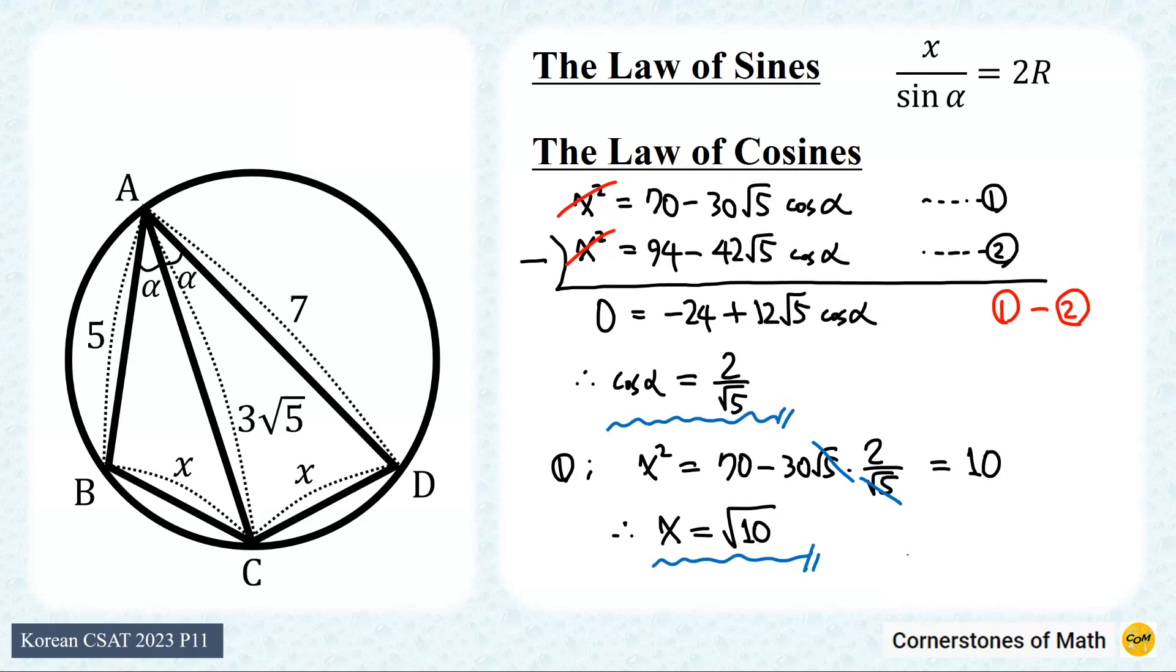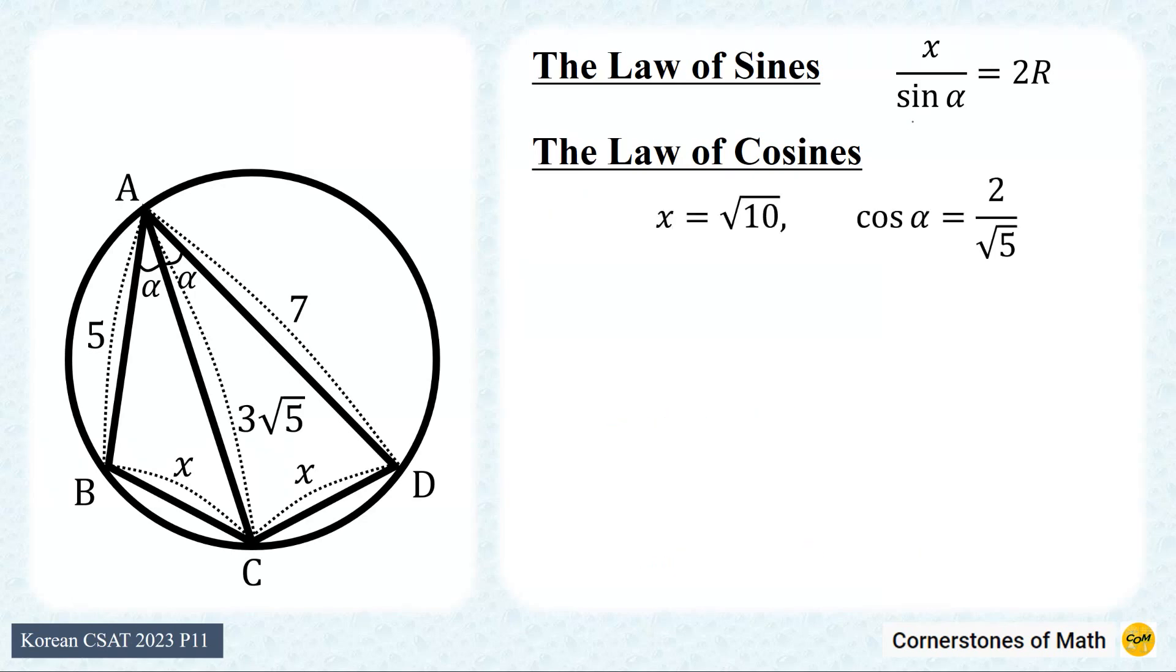So we have obtained these. Alright, so we have obtained these, but we need the value of sine alpha to calculate the radius r. Here, this angle alpha is between 0 and pi over 2. So sine alpha is positive, which is square root of 1 minus 2 over square root of 5 squared, which is 1 over square root of 5.